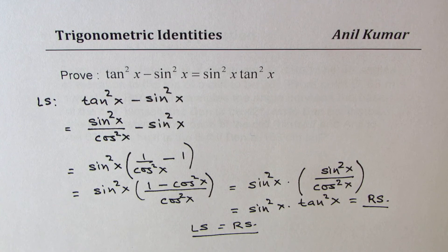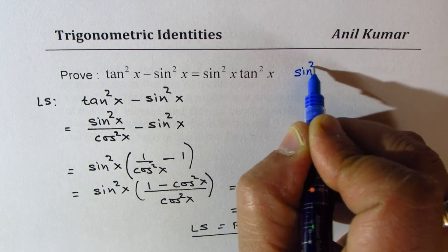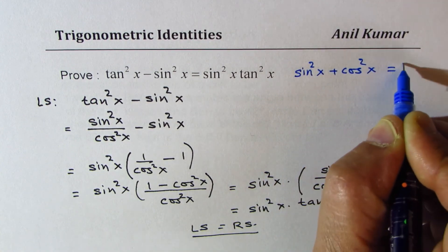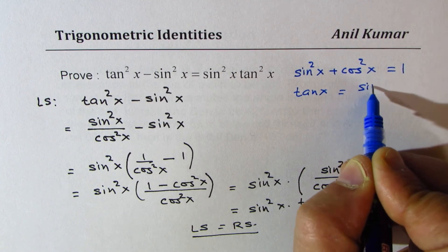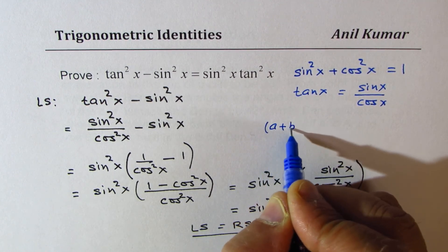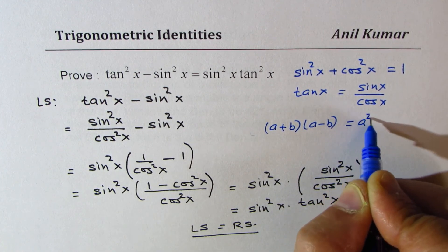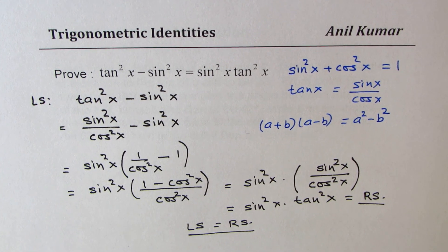I hope the steps are absolutely clear. Basically in proving these identities we have used only basic ratios: sin square x plus cos square x equals 1, tan x as the ratio of sin x and cos x, and the algebraic formula a plus b times a minus b equals a square minus b square. With the help of these basic formulas we can prove these identities. Feel free to write your comments and share your views. If you like and subscribe, that would be great. Thanks for watching and all the best.